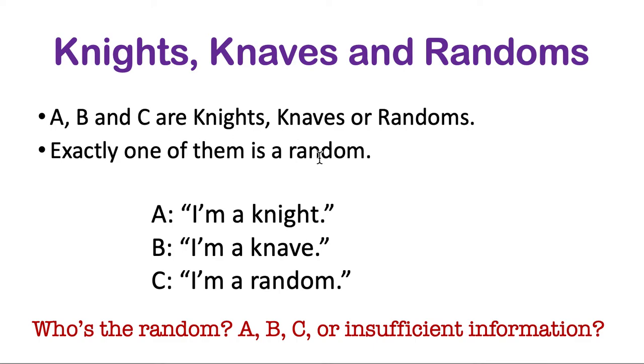Exactly one of them is a random. Which one is it? A, B, C, or can you not tell? And also tell me what are all of A, B, and C? Is A a knight or a knave or a random? Is B a knight, a knave, or a random? Etc. Okay, pause your videos.